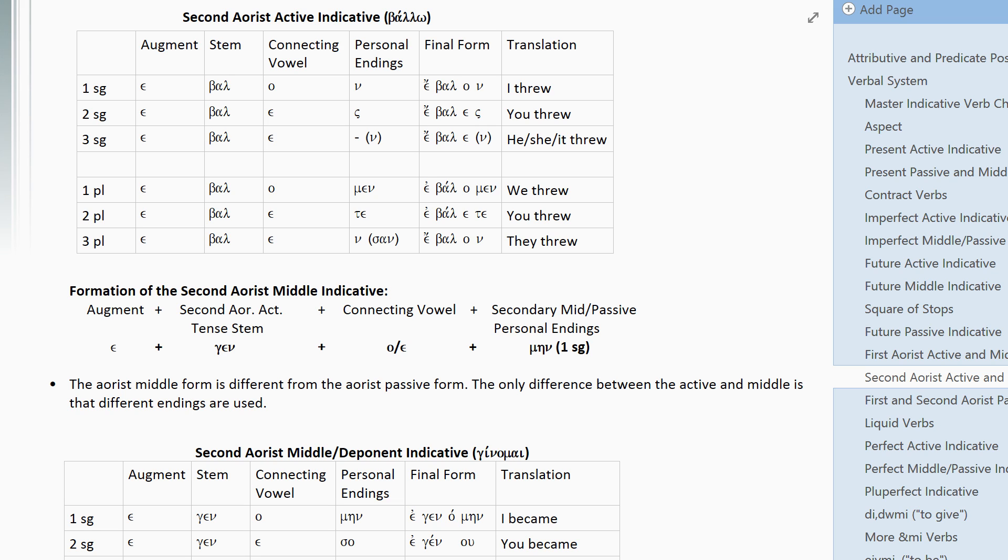And you can say that a few times if you want, but it's more important that you memorize the endings, on, s, e, omen, et, e, on. It's the secondary active endings. You need to know those because they're reused over and over. Hopefully you know them by now.